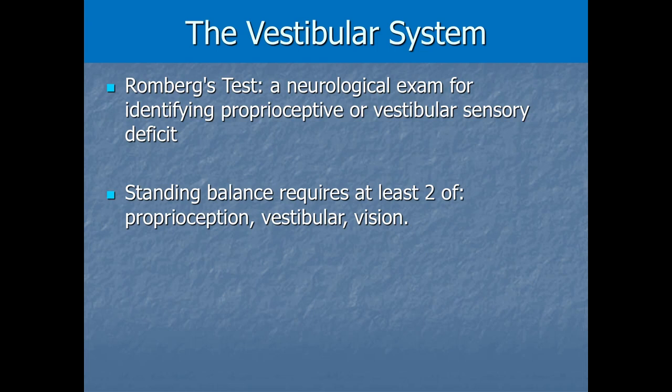Romberg's test — comparing standing balance with eyes open versus eyes closed — is a quick and easy clinical test to narrow down possible proprioceptive or vestibular impairment. I'll end this video with a short clip showing equipment used by researchers studying these sensory systems.